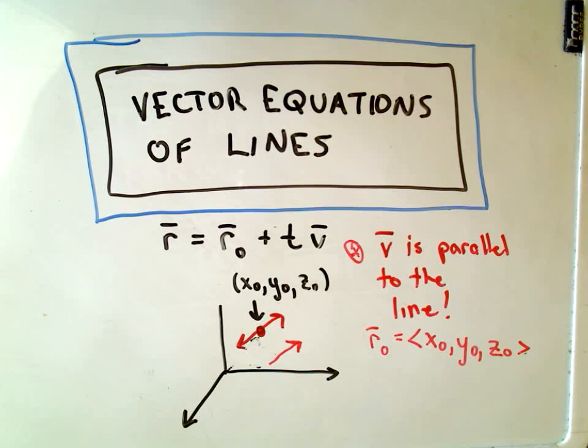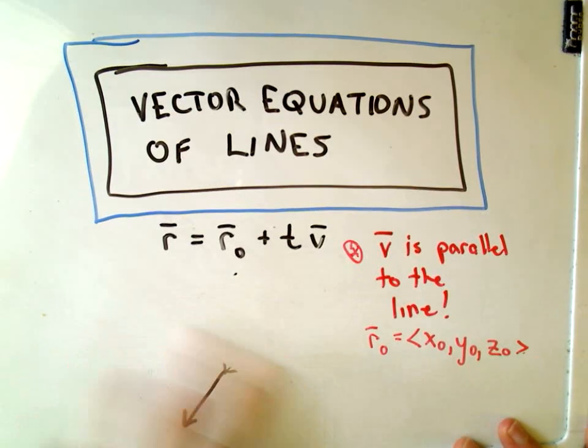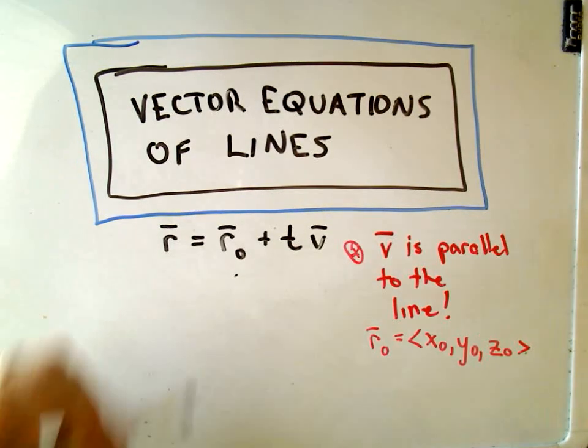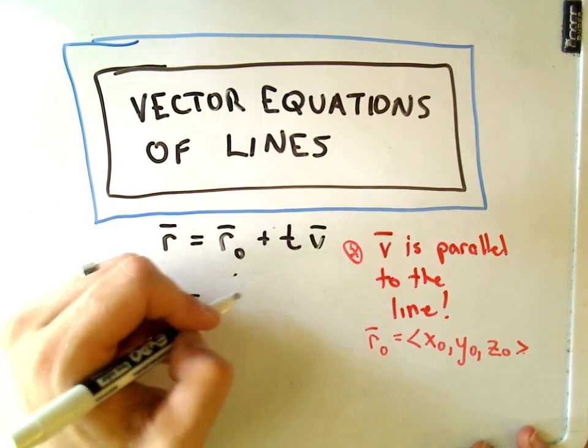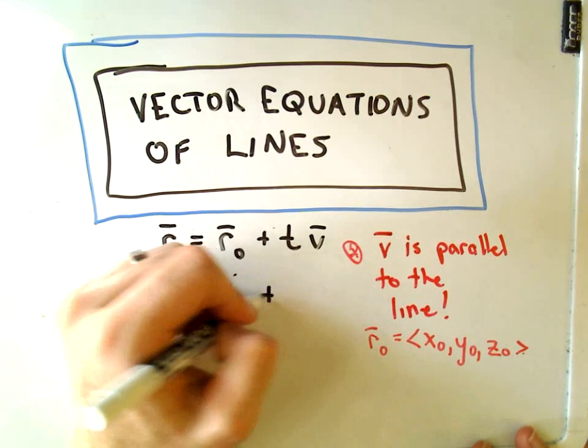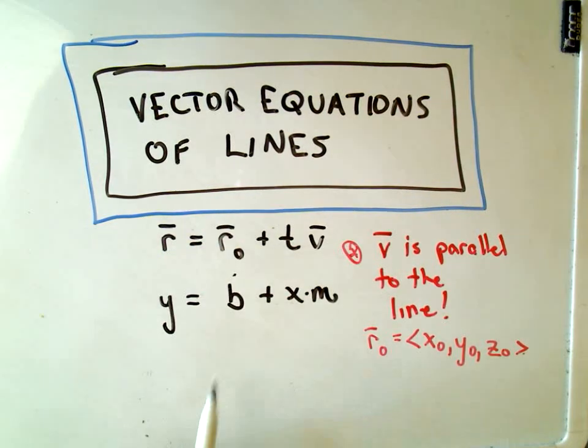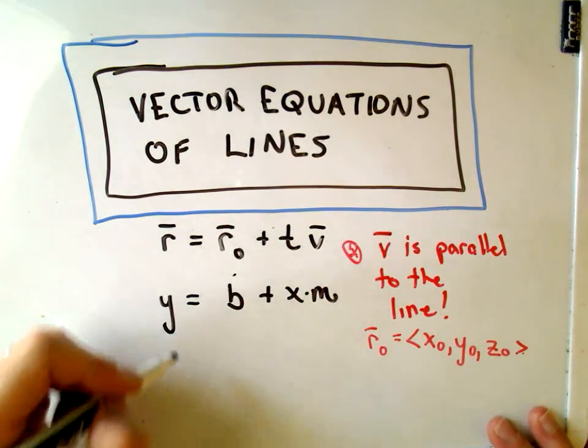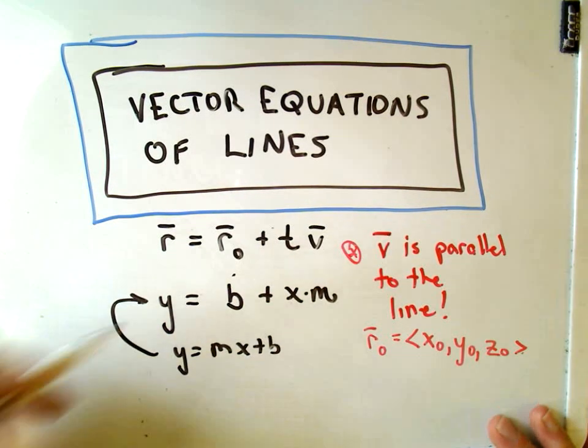Okay, so I don't know if it's worth mentioning kind of the way that I remember this. So let me erase my picture. If you think about point slope formula y equals mx plus b, I'm going to write it as b plus xm. So instead of writing y equals mx plus b, I'm going to rewrite it like this.